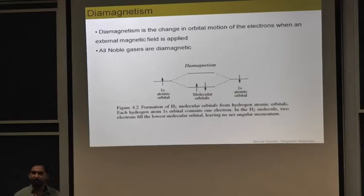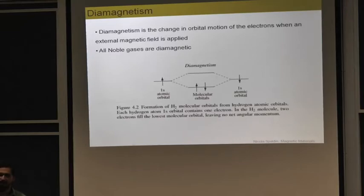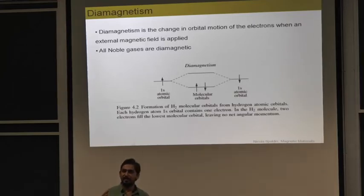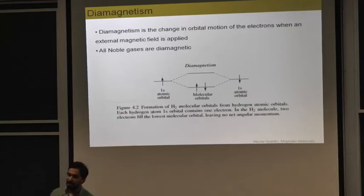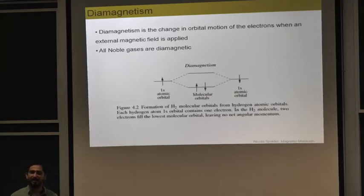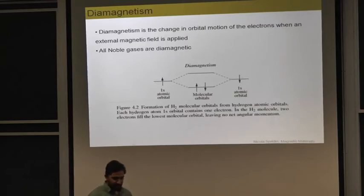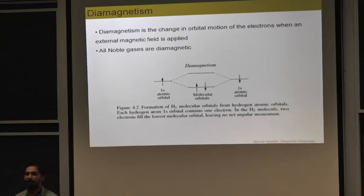I said 'crude way' because we have to be careful, because in some materials there are net magnetic moments of the system but they are still diamagnetic — like copper. Copper has a configuration of 3d10, 4s1, so there is one unpaired electron inside copper, but it is still diamagnetic. This is because other factors come into play inside copper, like metallic bonding of the electrons. Apart from noble gases, hydrogen and the diatomic molecule of nitrogen are also diamagnetic in nature.